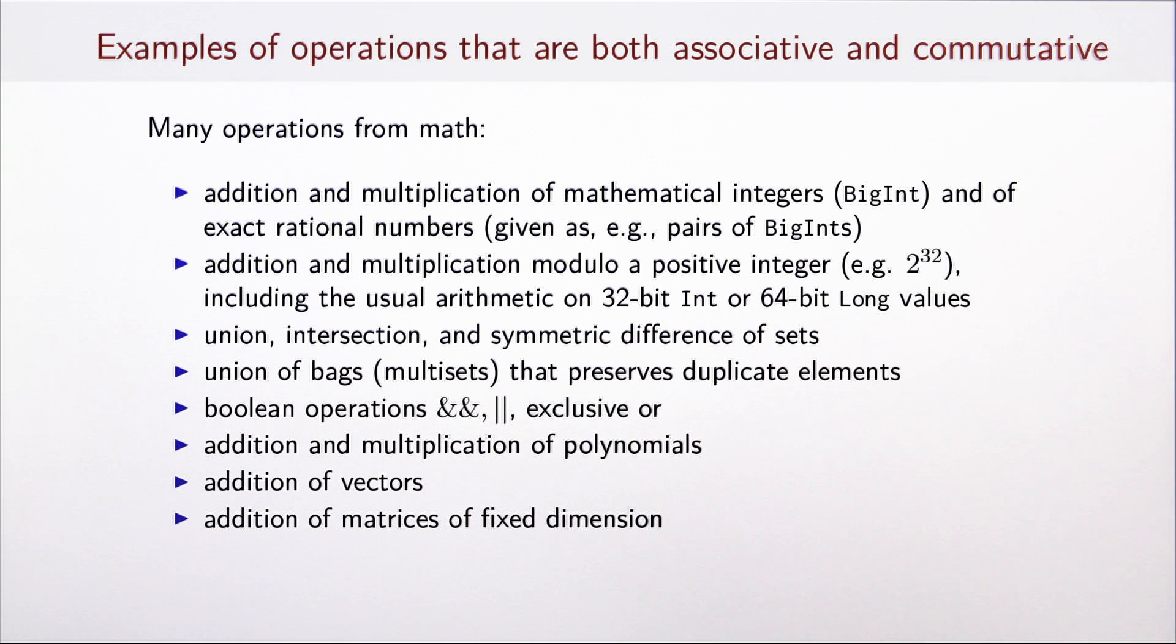Here are some examples of operations that are both associative and commutative. Many of them come from operations on numbers. Addition and multiplication of mathematical integers, which we can faithfully represent as BigInts in Scala, as well as exact rational numbers, which we can represent as pairs of BigInts, are associative and commutative operations.